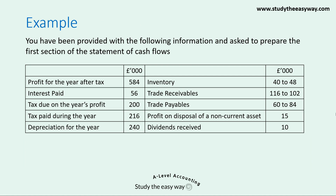Let's have a look at an example. You've been provided with information and asked to prepare the first section of the Statement of Cash Flows. Notice that the pound sign at the top of the columns is followed by three zeros, indicating all figures are in thousands of pounds. So profit for the year after tax isn't £584 but £584,000. I recommend continuing with this format — showing a pound sign with three zeros at the top of the column — to make it easier to read and help avoid confusion when lots of zeros are included in the body of the statement.